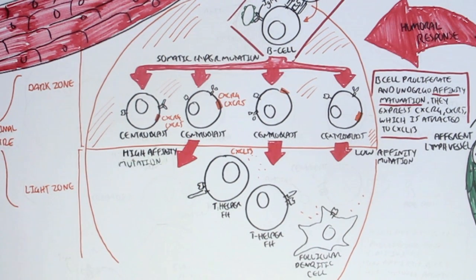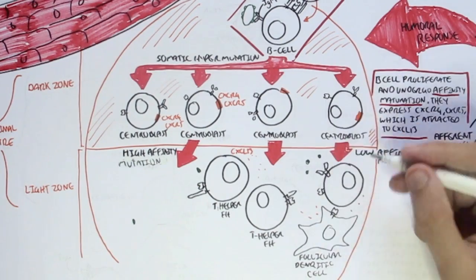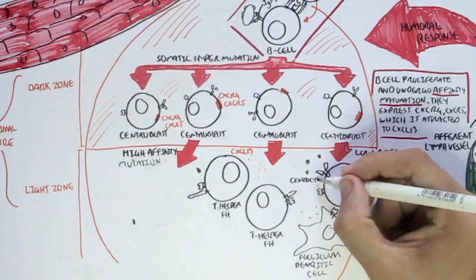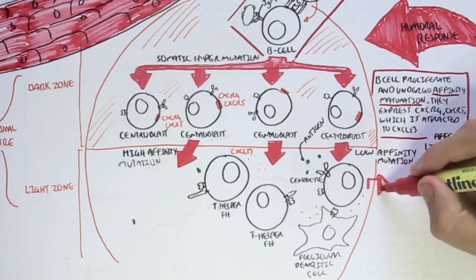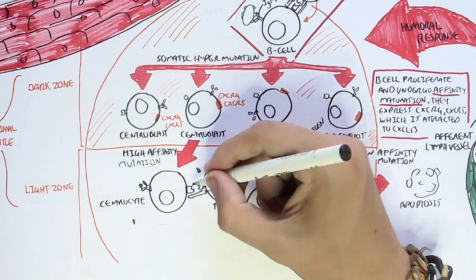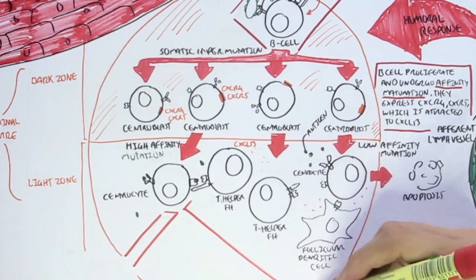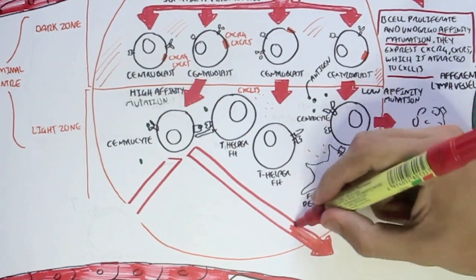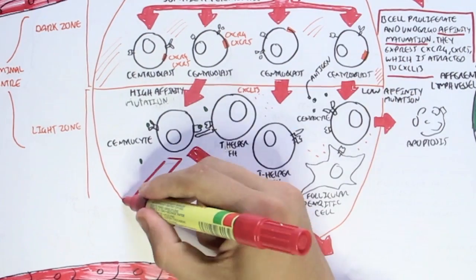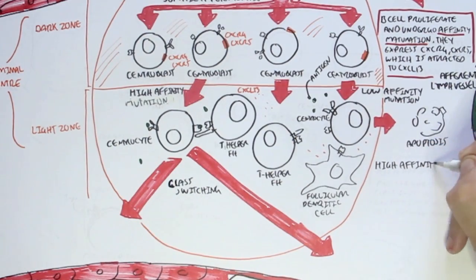Centroblasts can have either high affinity or low affinity mutation. If they have low affinity mutation, these centricytes can no longer recognize the antigen because their affinity has decreased, so they are not needed and die through apoptosis. However, if a centroblast moving into the light zone has a high affinity mutation, it means this centricyte has a higher affinity for the antigen and can recognize it. If it does, the T helper follicular cells within the light zone bind with this centricyte and send cytokines to cause it to undergo class switching, differentiation, and proliferation.